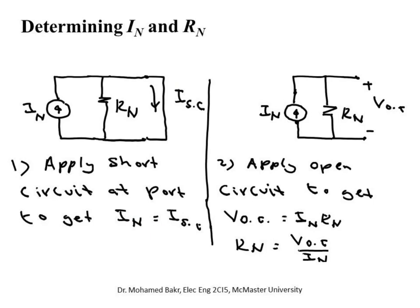To find the Norton resistance, create an open circuit at the port. With an open circuit, I_Norton flows only through R_Norton, so the open-circuit voltage V_oc = I_Norton × R_Norton. Therefore R_Norton = V_oc / I_Norton, which you already determined from the short-circuit step. Notice this is the same expression used for R_Thevenin: R_Th = V_oc / I_sc, and I_sc equals I_Norton.